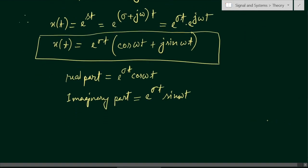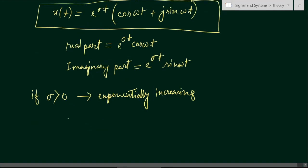If σ > 0, the signal is exponentially increasing. If σ < 0, the signal is exponentially decreasing.